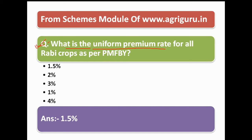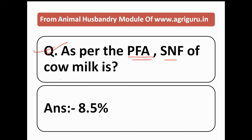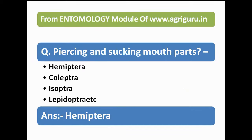The question is: what is the uniform premium rate for all rabi crops as per Pradhan Mantri Fasal Bima Yojana? The options are 1.5%, 2%, 3%, 1%, or 4%. The correct answer is 1.5%. The SNF of cow milk is 8.5%. This question is from the animal husbandry module of agriguru.in.